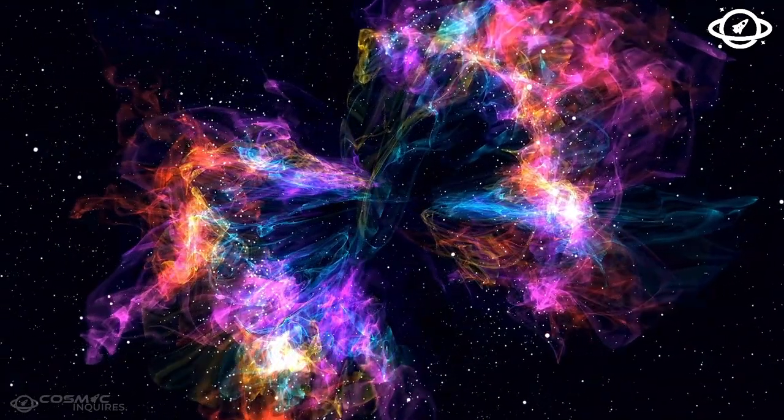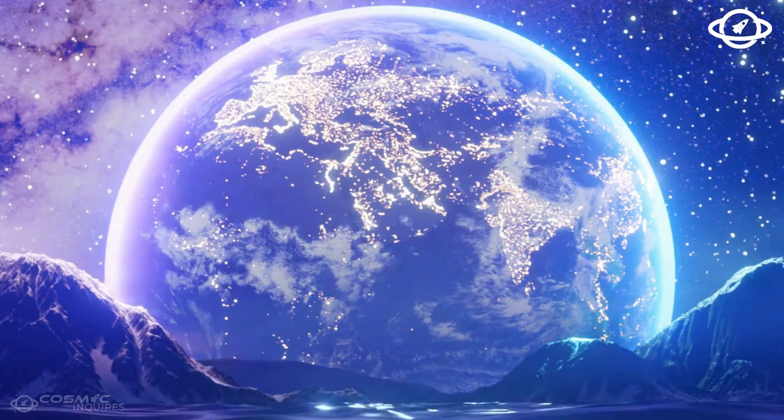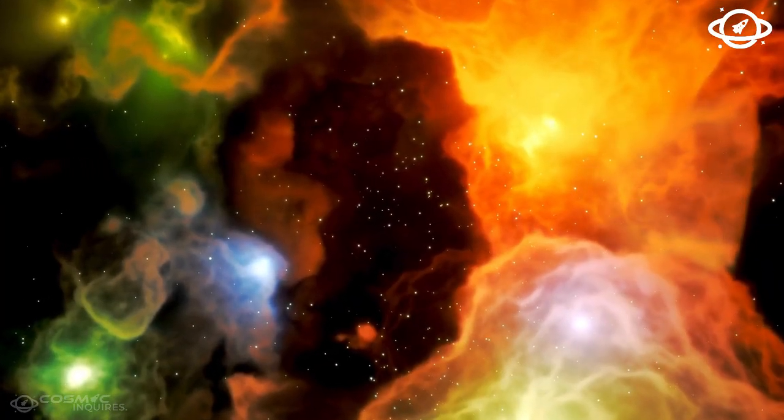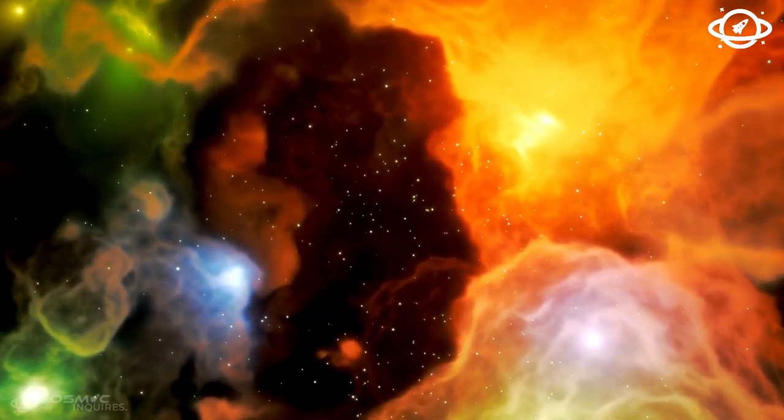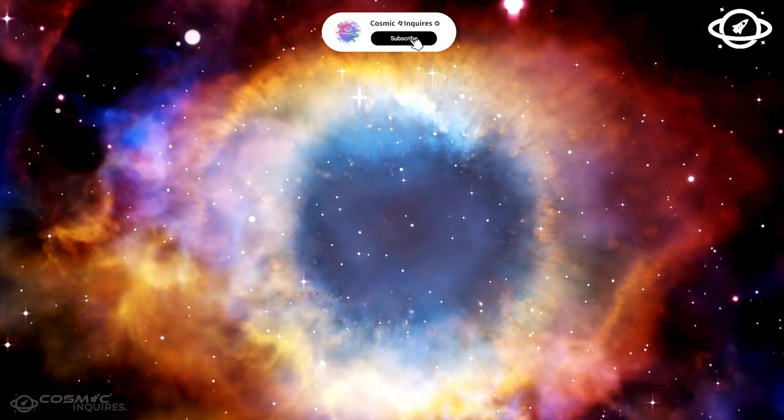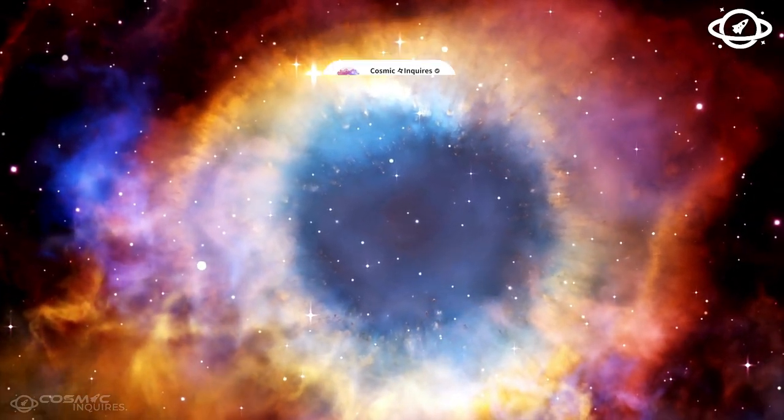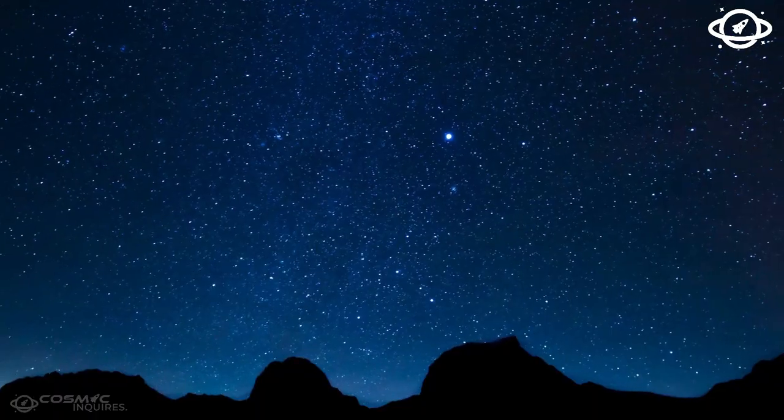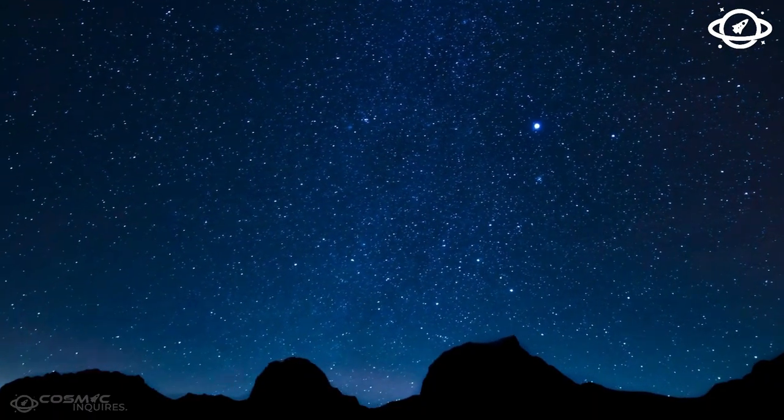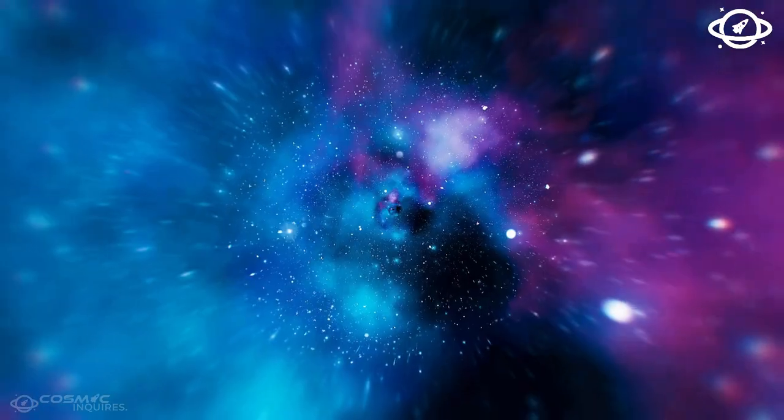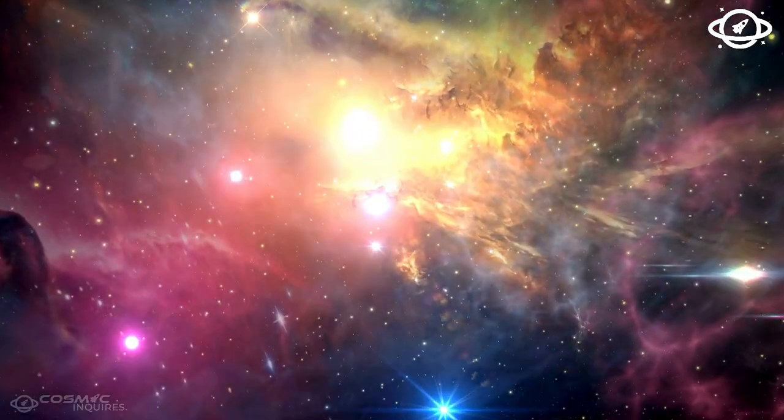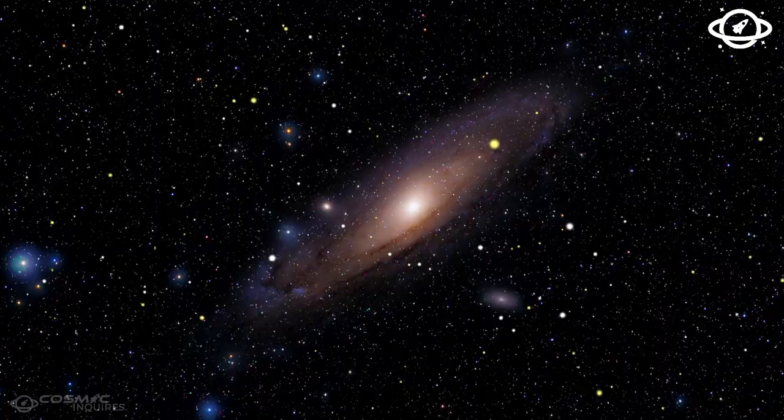Eris was also found in 2005. It is a bit smaller than Pluto but heavier, with a diameter of about 2326 km. Eris is an important part of the Kuiper Belt. Its discovery led to a re-evaluation of what a planet is and helped us learn more about the variety of objects in the Kuiper Belt. These dwarf planets tell us a lot about the Kuiper Belt's makeup, how it has changed over time, and its place in the history of the solar system. Without them, we would have no idea what this area was like.